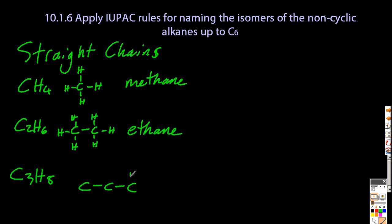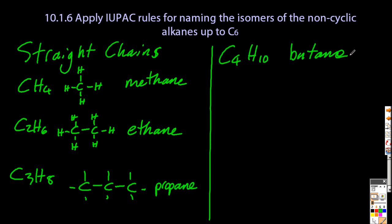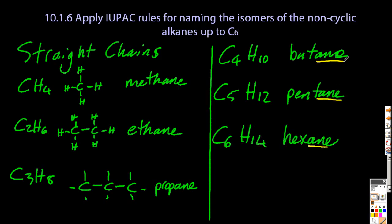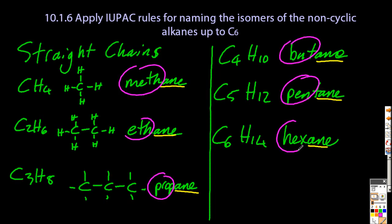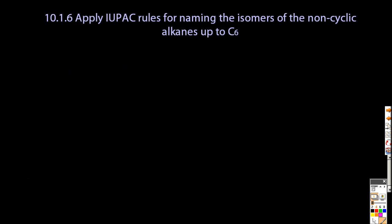You essentially just have to learn the first six: methane, ethane, propane, butane, pentane, and hexane. They all end in "-ane", and that tips you off that they're alkanes. The prefixes, some make more sense than others, like pent has five carbons, hex has six, but the others you just have to learn.